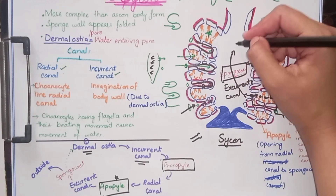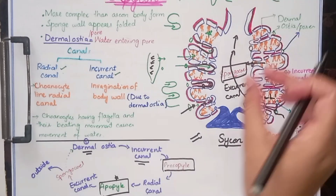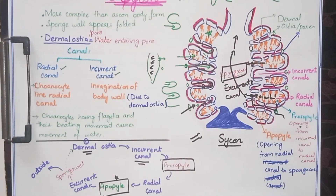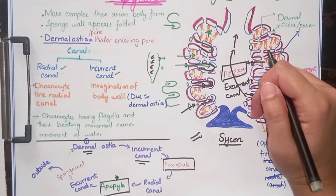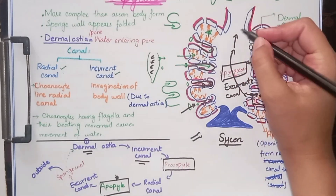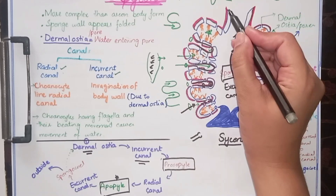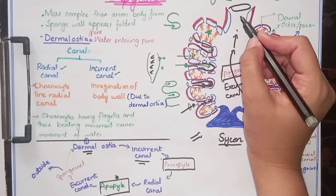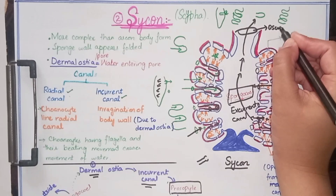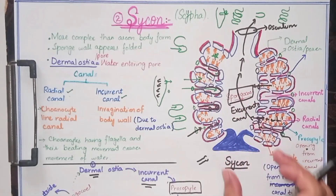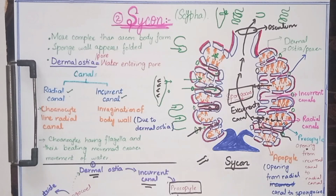Through the excurrent canal, water moves further out. Different types of metabolic wastes are present along with water and they are also carried out and moved away from the body. At the end there is another big opening known as the osculum. So this is all of Sycon body form. The water current mechanism in Sycon is most advanced, and more water enters due to this invagination.